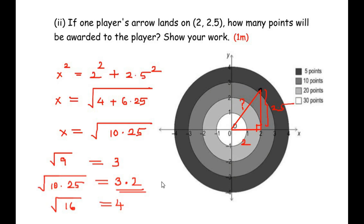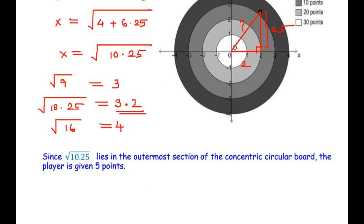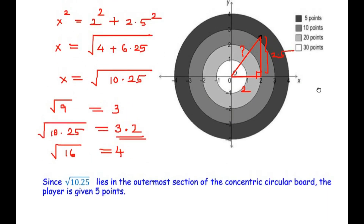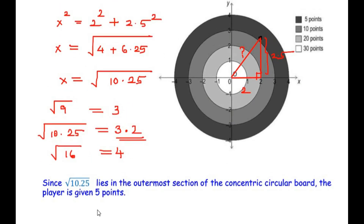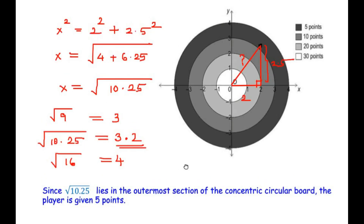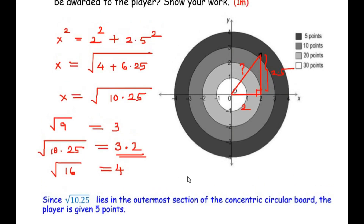Since √10.25 lies in the outermost section of the concentric circular board, the player is given 5 points.